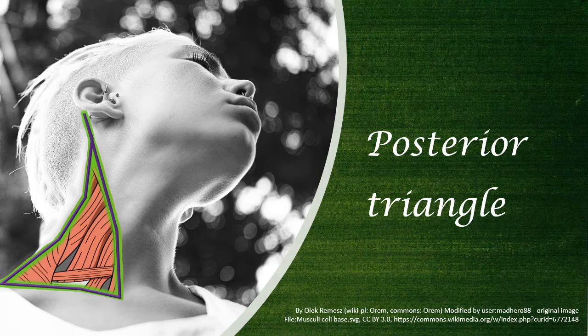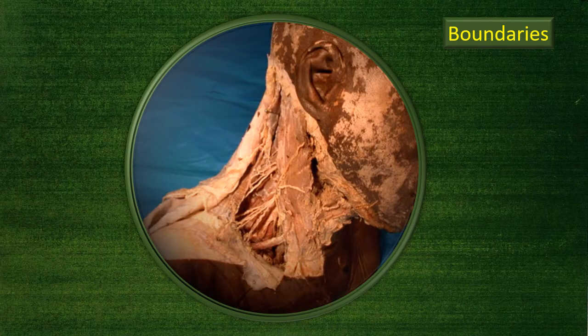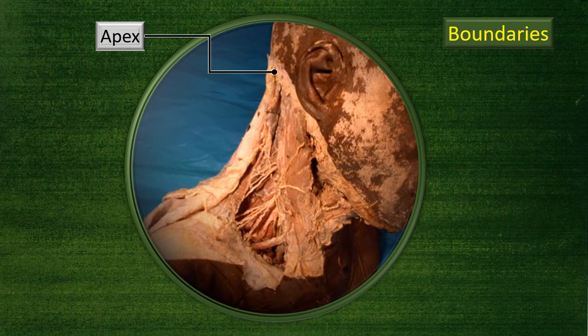Let's take a look at a dissection of the posterior triangle. The sternocleidomastoid is a key muscle to keep in mind because it divides the neck area into an anterior triangle, anterior to the sternocleidomastoid, and a posterior triangle, posterior to this muscle.